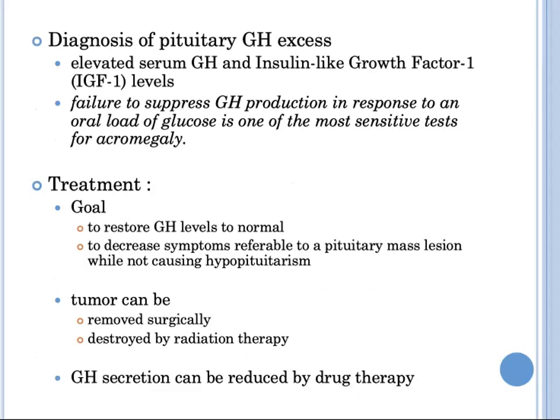The diagnosis of somatotrope adenomas relies on documenting elevated serum growth hormone and IGF-1 levels. One of the most sensitive tests for acromegaly is failure to suppress growth hormone production in response to an oral glucose load. The goal of treatment is to restore growth hormone levels to normal and decrease symptoms referable to pituitary mass lesions without causing hypopituitarism. The tumor can be removed surgically, destroyed by radiation, or growth hormone secretion can be reduced pharmacologically.